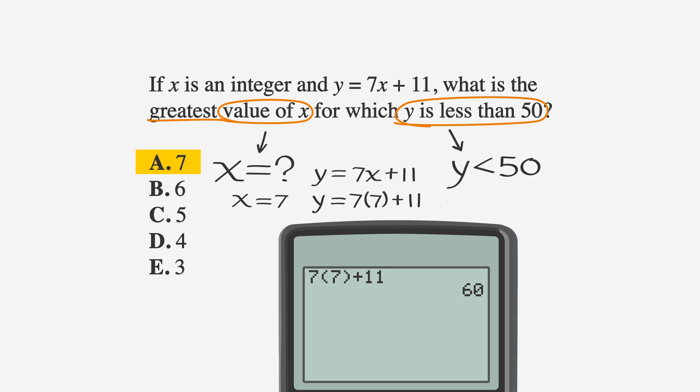Now ask yourself, is 60 smaller than 50? No, obviously. So let's move on to b, which is 6.